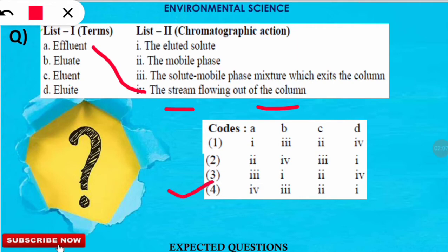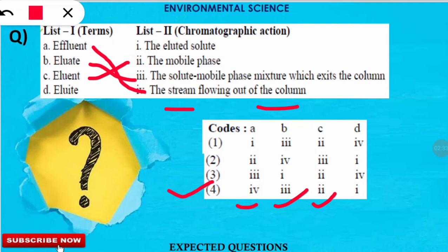Similarly, B matches with number three: 'eluate' means the solute-mobile phase mixture which exits the column. C matches with two: 'eluent' in a chromatographic action is the mobile phase. And D, 'eluted solute,' is the last match. These are confusing terms — pause the video to review their meanings.